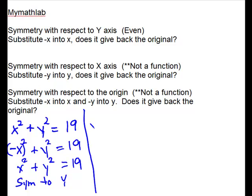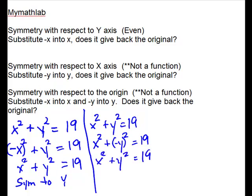We'll do the same problem. And if we're looking for symmetry to the x-axis, substitute negative y into y. You can get the idea when you're squaring these, it's going to give you back the same. Gives back the same. So this shows symmetry to x.